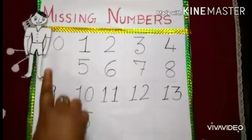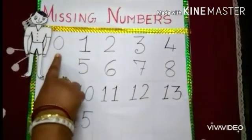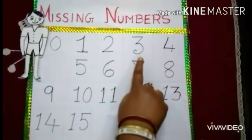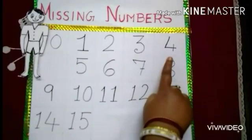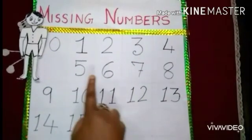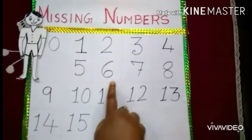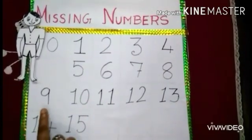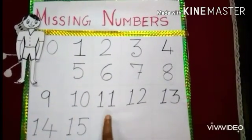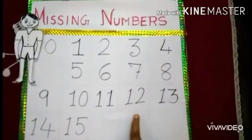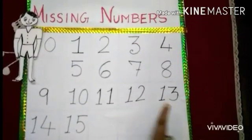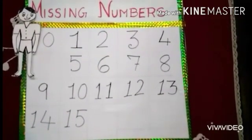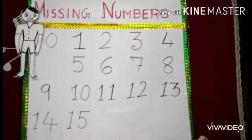Again we will read it. Zero, one, two, three, four, five, six, seven, eight, nine, ten, eleven, twelve, thirteen, fourteen, fifteen.